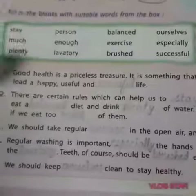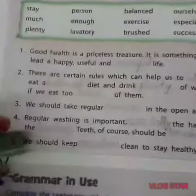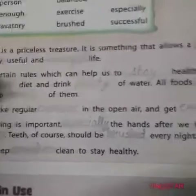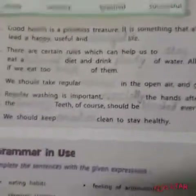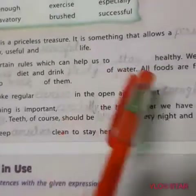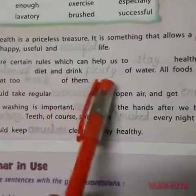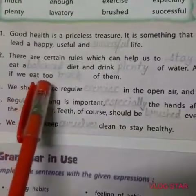Moving on to fill in the blanks with suitable words from the box. The first sentence: good health is a priceless treasure. It is something that allows a person to lead a happy, useful and successful life. Next: there are certain rules which can help us to stay healthy. We should eat a balanced diet and drink plenty of water. All foods are fattening if we eat a lot of them.